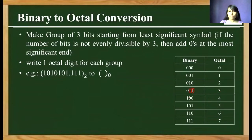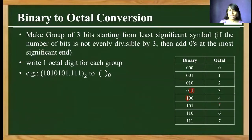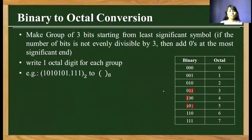For octal number 4, the bit with weight 4 is set to 1, giving binary pattern 100. For octal number 5, we use 4 plus 1, giving binary pattern 101. This is how we write the binary equivalent of any octal number using the 4-2-1 weight system.